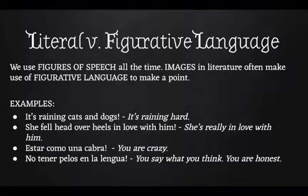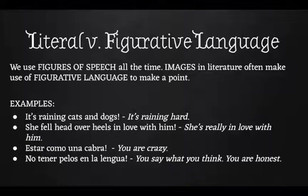Here are some figures of speech you already know. 'It's raining cats and dogs' — is it literally raining cats and dogs? No, it just means it's raining hard. Or 'she fell head over heels in love with him' — she didn't literally tumble around on the ground; it's just saying she's really in love. For those of you who speak Spanish, 'estar como una cabra' — to be like a goat — when you call someone a goat, you don't mean they're literally a goat; you're just saying they're crazy.